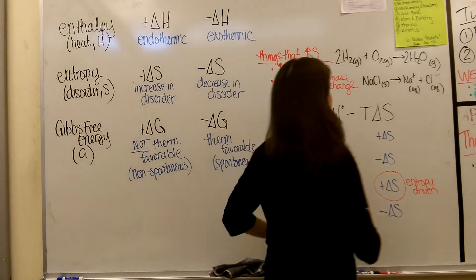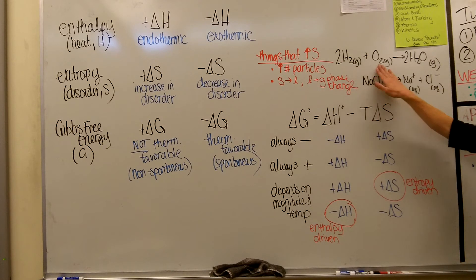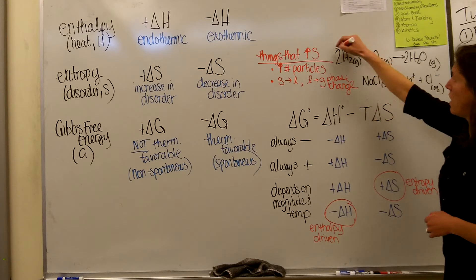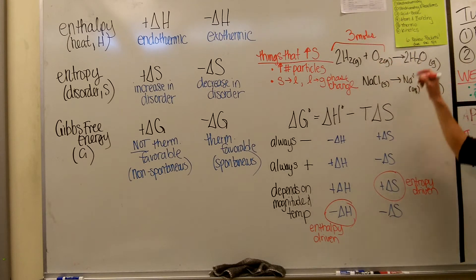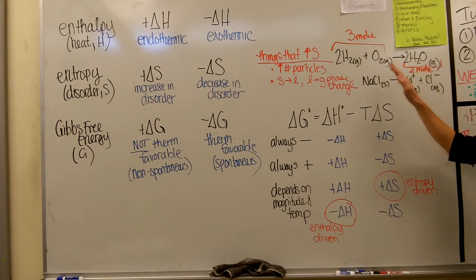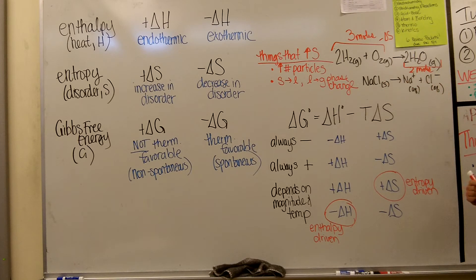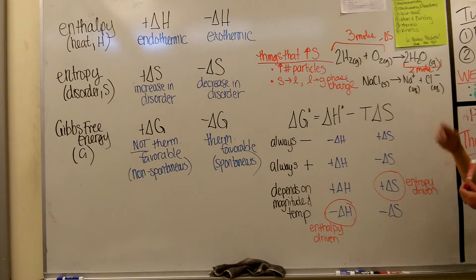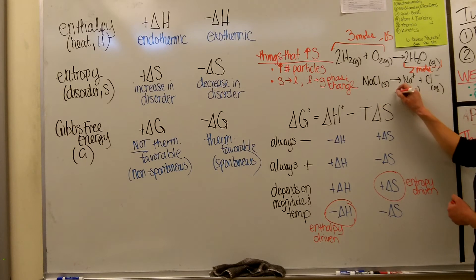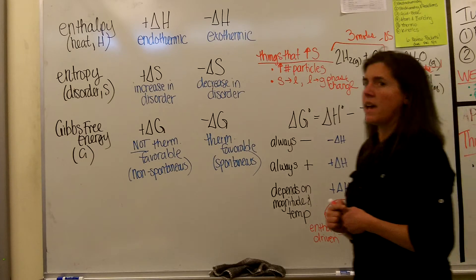I put some examples up here. You can see this combination reaction where hydrogen gas and oxygen gas are making water vapor. The state of matter is the same on both sides, but on the left we have three moles of particles, and on the right some have combined, so now we only have two moles of particles. There is less disorder, so this would have a negative delta S value. Another example is dissolving something in water, which tends to have a positive delta S value — the particles are breaking apart and becoming more disordered, with more separate particles on the right than on the left.